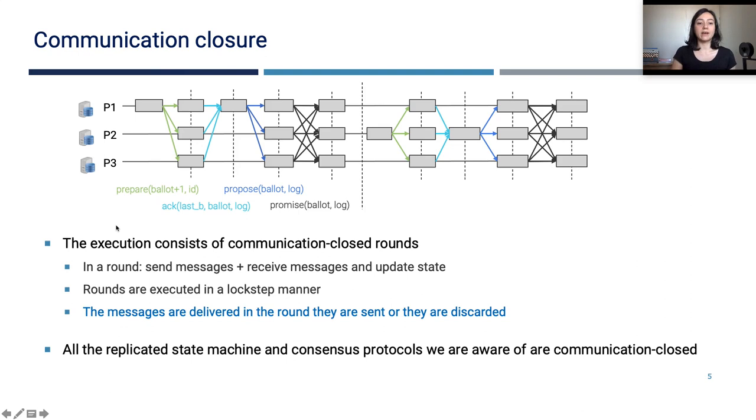Rounds are executed in a lockstep manner. So each process actually keeps some local variables to keep track of their local time, their current round number. And when they send a message, the message carries some metadata which can be used to identify its round number. A process updates its state based on a message it receives only if the message is up to date with its current time, current round. So the messages are delivered in the round they are sent or they are discarded. For example, if I receive a message from a previous round in that round, then the process will discard that message. It's important to note that all the replicated state machine and consensus protocols we are aware of are communication closed.